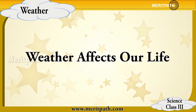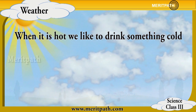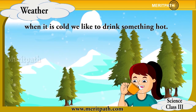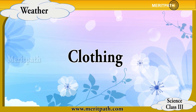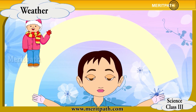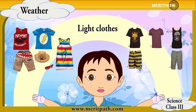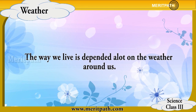Weather conditions affect our life in many ways. The food we eat depends greatly on the weather around us. During summer we would like to eat food which keeps the body cool, while during cold weather we prefer eating or drinking food which keeps us warm. We also prefer our clothes accordingly — when it's cold we wear warm clothes, and when it's hot we wear light and cotton clothes. During the rainy season, raincoats and umbrellas are used. The way we live is dependent a lot on the weather around us.